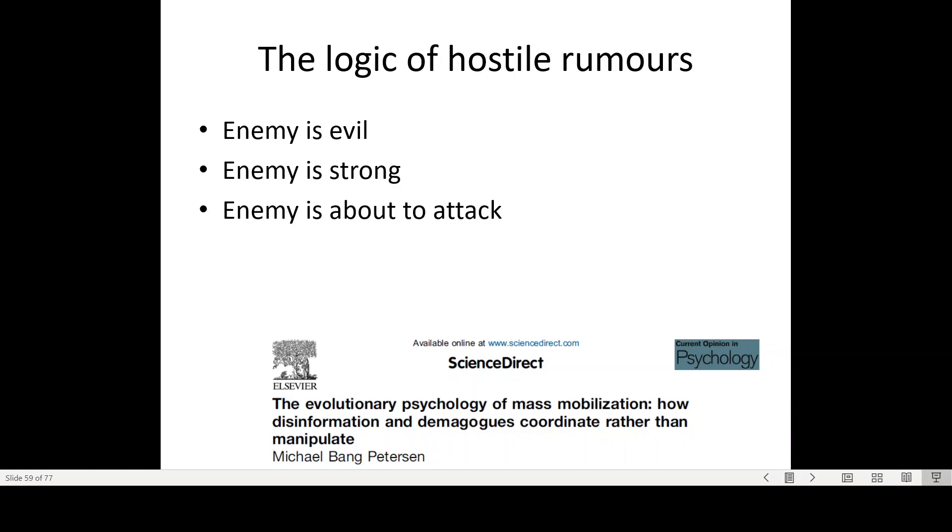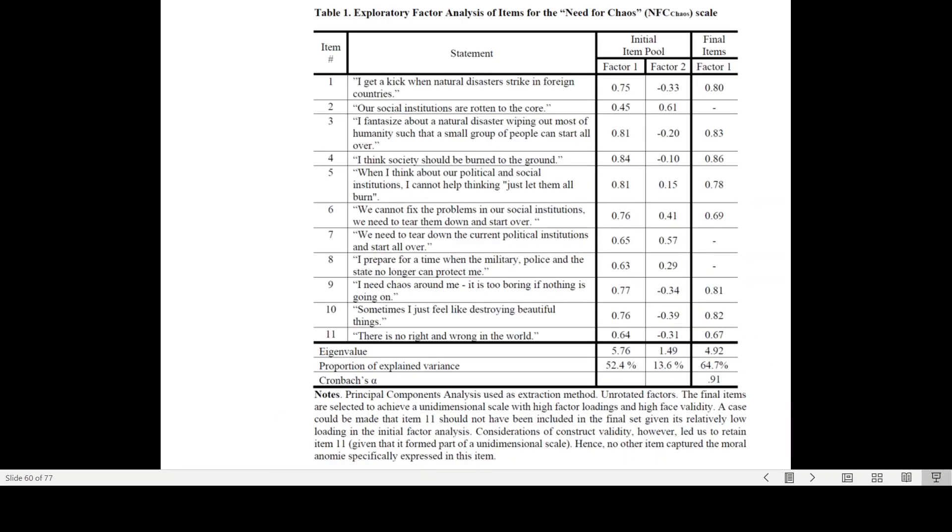So the argument here is this mass mobilization through fake news can be seen as a coordination effect rather than a manipulation effect. And in a different project, the Danish group around Michael Bang Petersen and Lene Aarøe, they developed a new scale which they called Need for Chaos. I'm not too sure about the name, but it captures quite nicely a couple of very destructive tendencies where people report that they get a kick out when natural disasters strike in foreign countries, a belief that social institutions are rotten to the core, that they fantasize wiping out most of humanity so that only a small group of people can start all over, thinking about society and trying to burn it down.